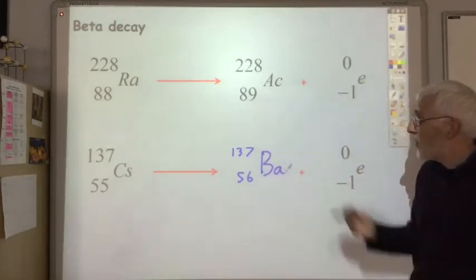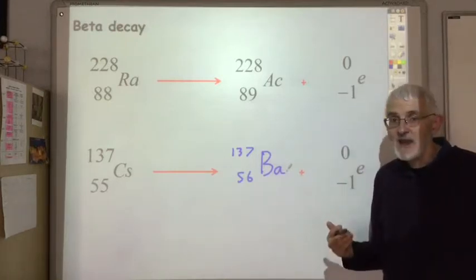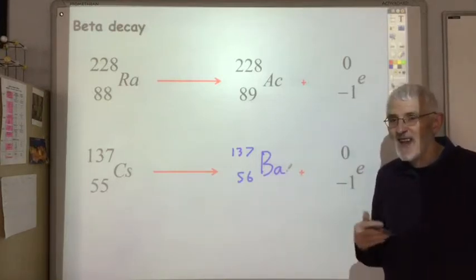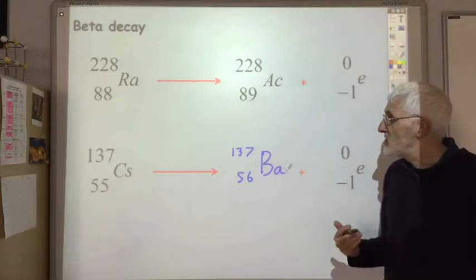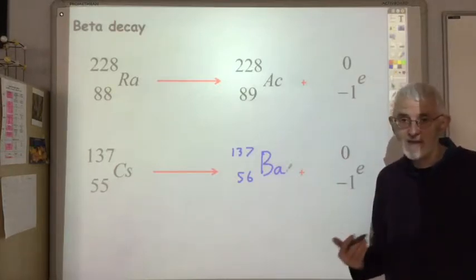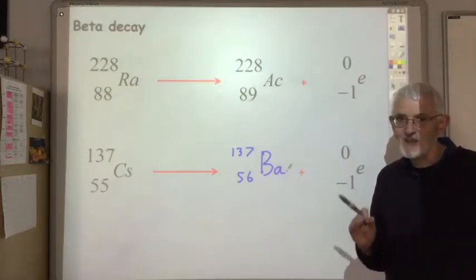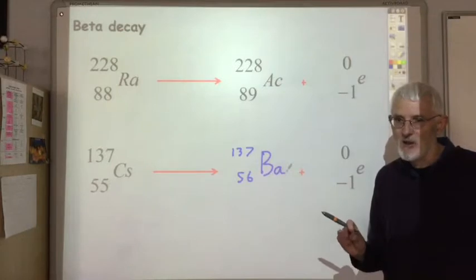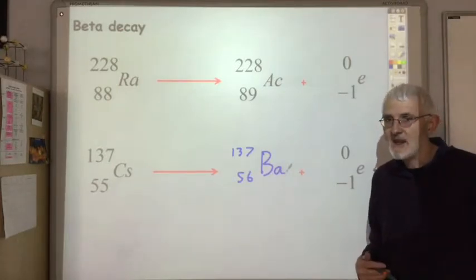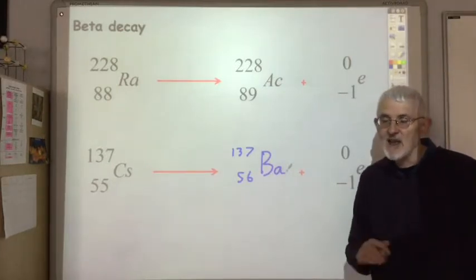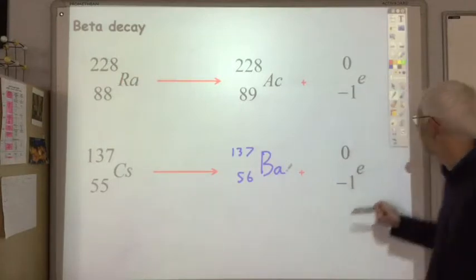I won't do an equivalent example for gamma decay, because gamma decay doesn't actually change the atomic number or the mass number — it's just a de-excitation process which usually accompanies alpha or beta decay. So in terms of balanced nuclear equations, you don't need to worry about gammas.